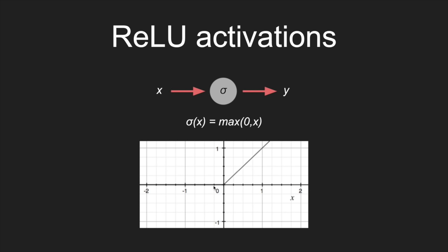ReLU is also really easy to think about in terms of derivatives. If the input is positive, we add a little bit to the input and that same exact amount gets added to the output — so the derivative is one. If the input is negative, the output doesn't change at all with respect to the input — the derivative is zero. So the derivative of the ReLU activation unit is one when the input is positive and zero when the input is negative. That is basically the simplest possible activation function you could have that's not just a straight line — it's a straight line with a bend in the middle and then another flat segment before.